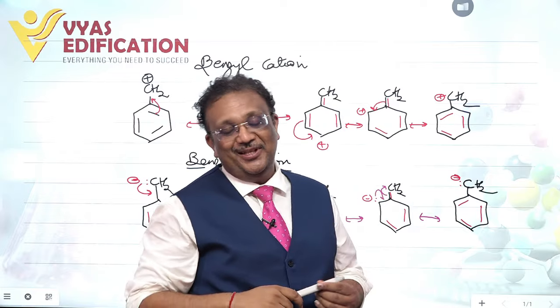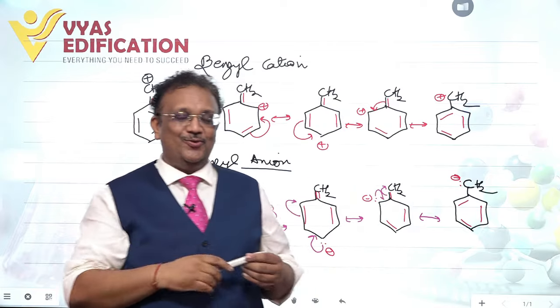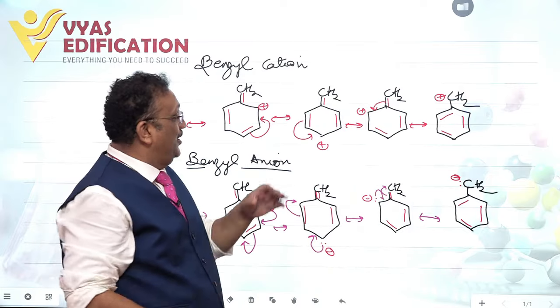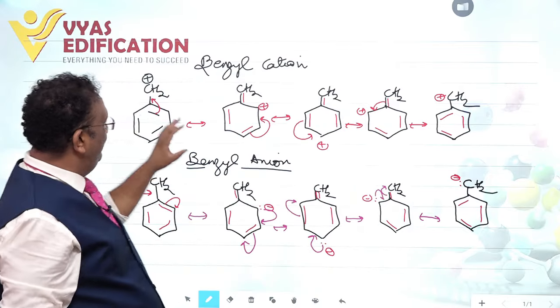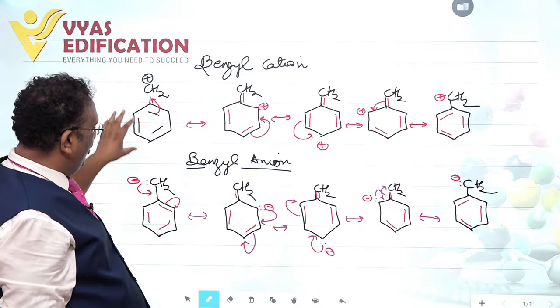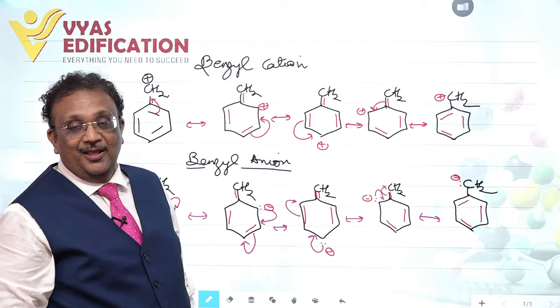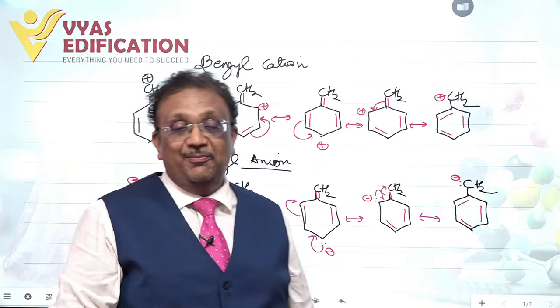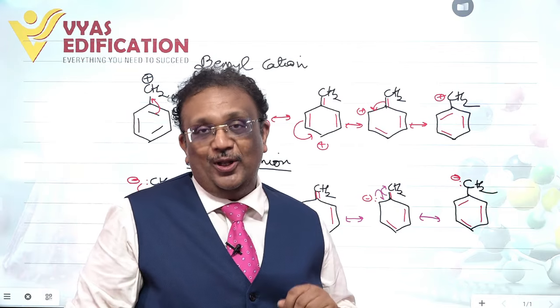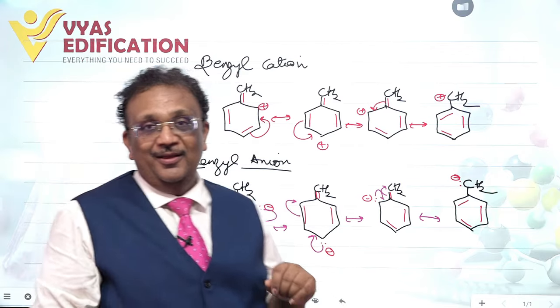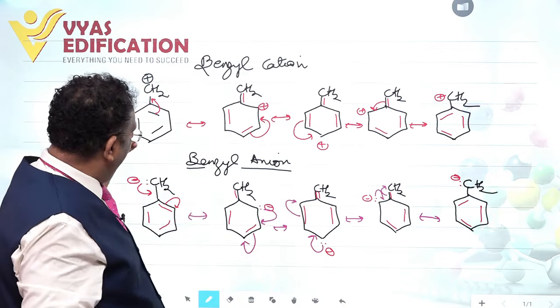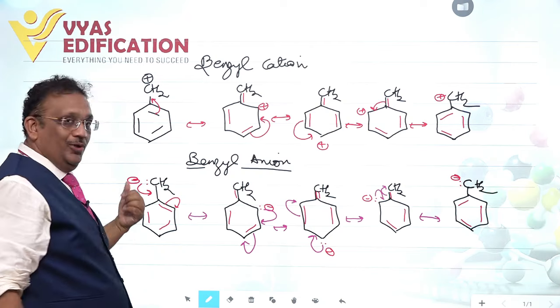Look at this most crucial chemistry question. You have benzyl cation and benzyl anion. If we ask you to tell who is aromatic — cation, anion, or neither?